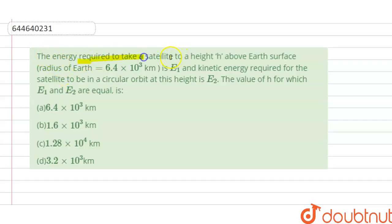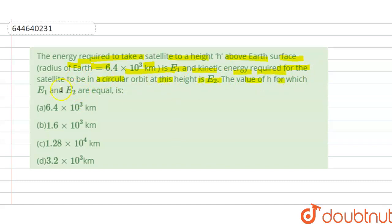The energy required to take a satellite to a height h above the Earth of radius 6.4 × 10³ km is E1, and the kinetic energy required for the satellite to be in circular orbit at height h is E2. The value of h for which E1 and E2 are equal is given by options A, B, C, D.